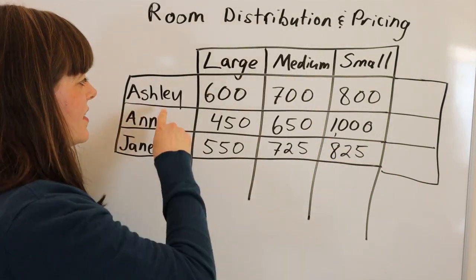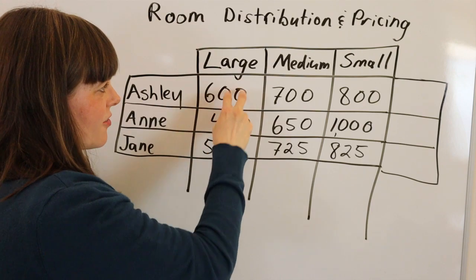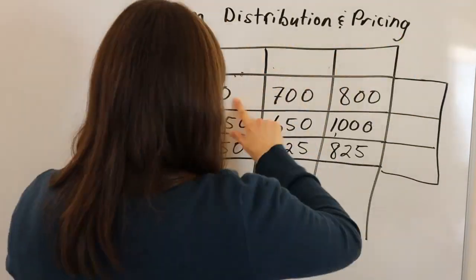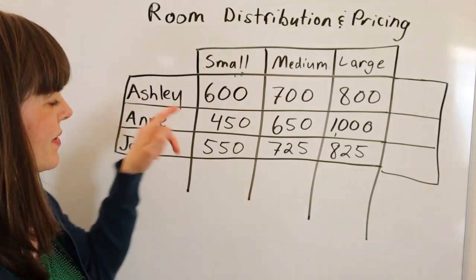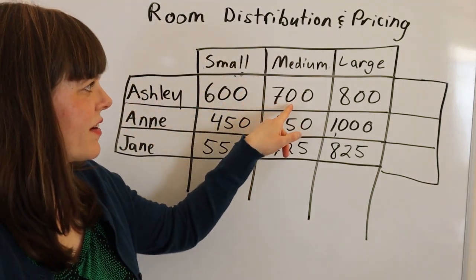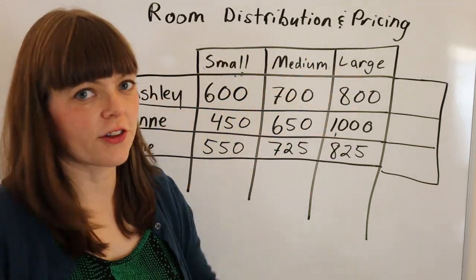Let me write that up and then I'll explain it again. So here were the bids. I bid $600 for the small room, $700 for the medium room, $800 for the large room.